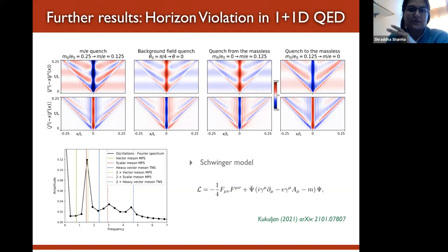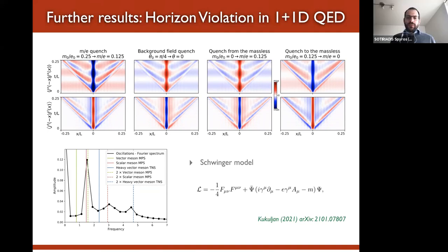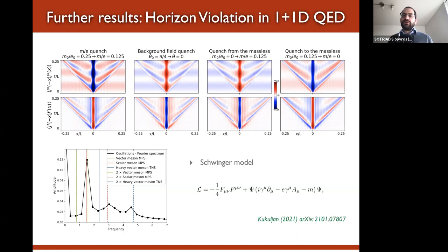As a further result, a collaborator from the previous work recently studied the Schwinger model — essentially QED in one-plus-one dimension, describing fermions interacting with the electromagnetic field, which via bosonization maps to a bosonic theory. Using similar numerical tools, he found the same horizon-violation effect is present also in one-plus-one dimensional QED.